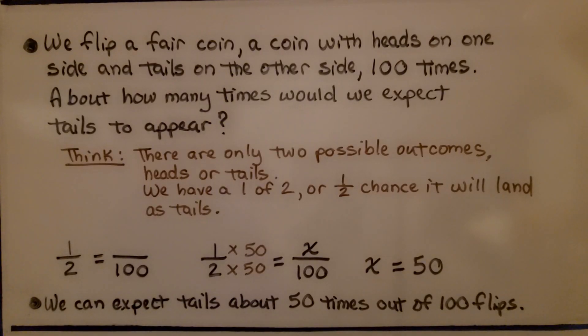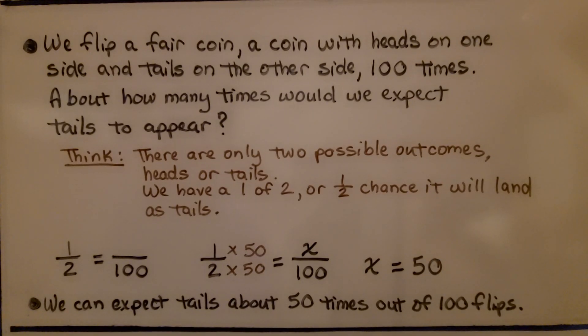Here's our last one. We flip a fair coin. It's a coin with heads on one side and tails on the other side, 100 times. About how many times could we expect tails to appear? We think there's only 2 possible outcomes, heads or tails. We have a 1 of 2, or 1/2 chance, it will land as tails.